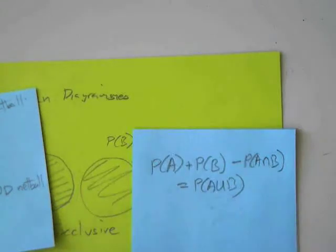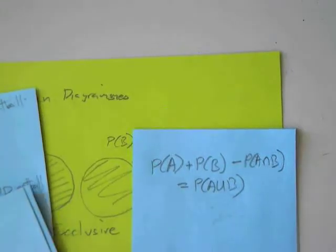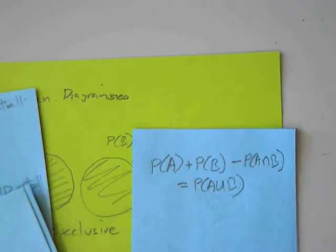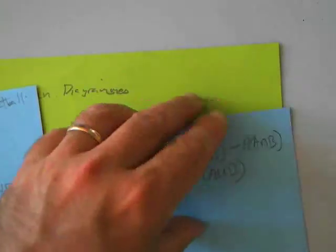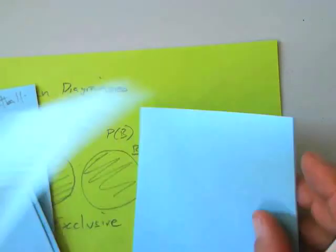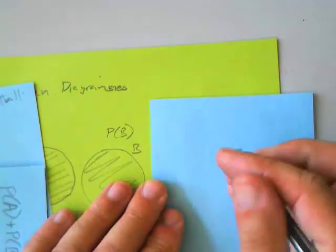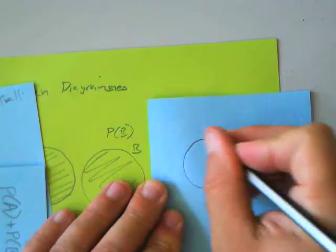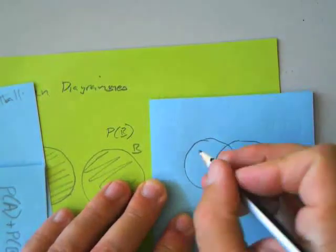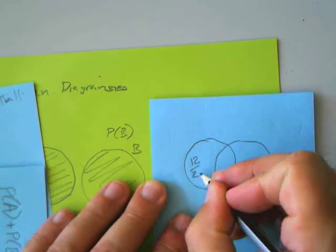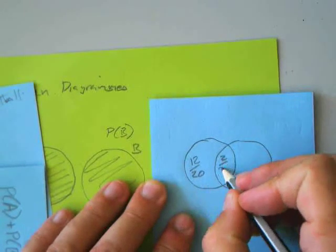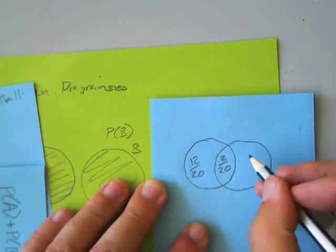And that's all you need to worry about, really, for Venn diagrams — everything else is about description. So for instance, here is my classical Venn diagram. I'm going to tell you that one section is 12 out of 20, that is 2 out of 20, and that is 4 out of 20.